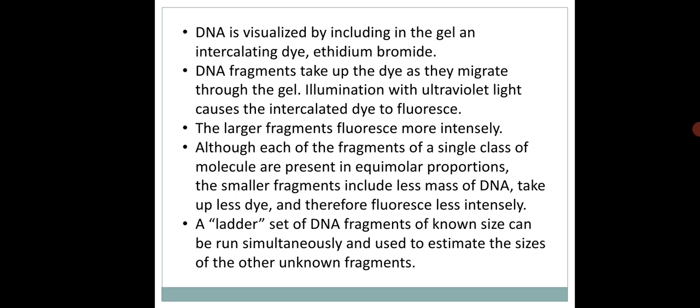Once these intercalating agents sit between the nitrogen bases of the DNA, they fluoresce under UV light — they emit light. When we place the gel on a UV source, they start to produce light. To visualize or observe the DNA bands, we use ethidium bromide, which is an intercalating agent.